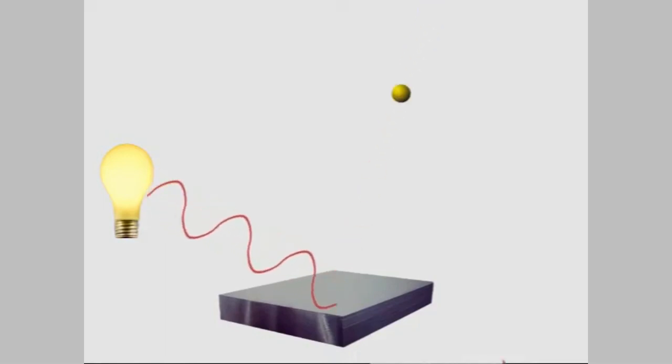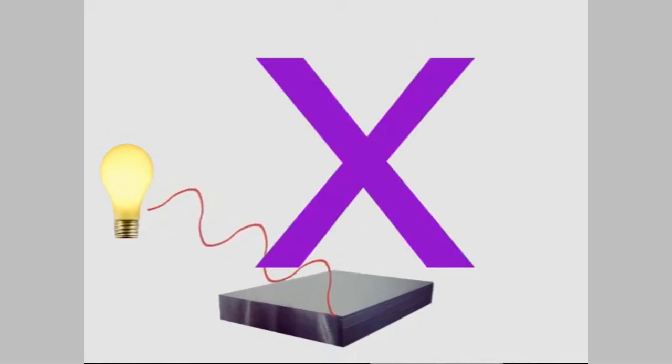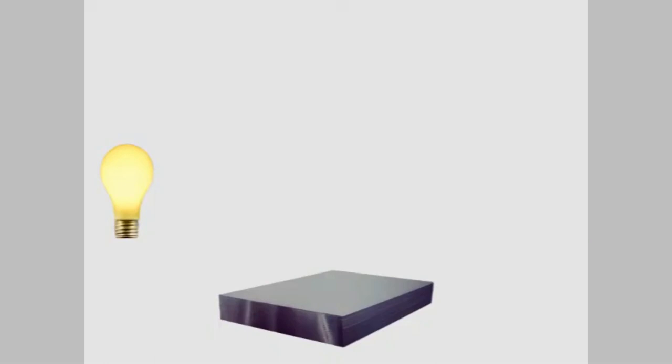But if you make the light brighter, that's not what happens. If you make the light brighter, it doesn't change the speed of the electrons at all. Instead, you just get more electrons coming off the metal.